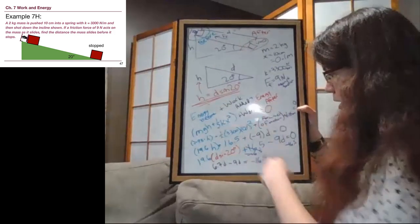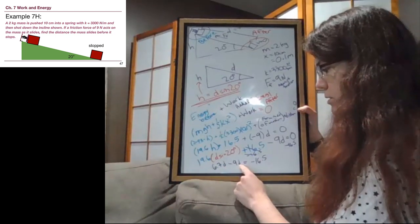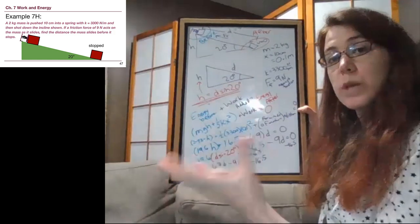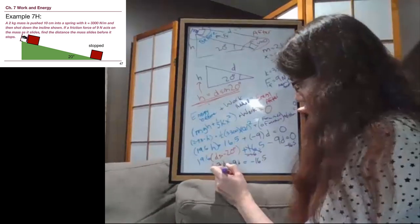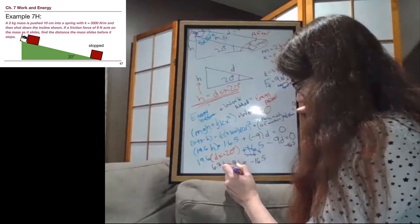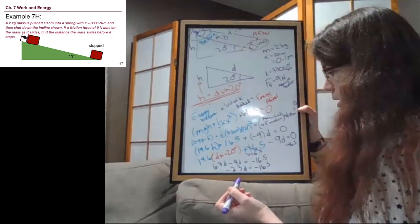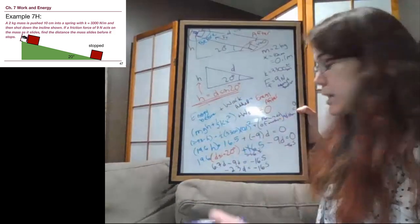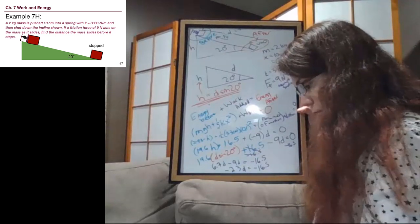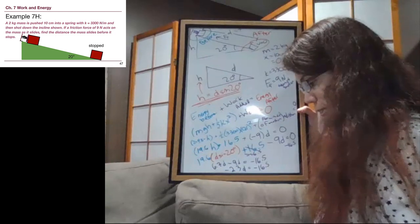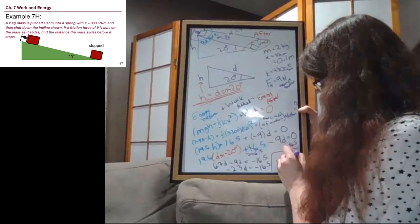Although it might look a little bit complex, what we see is that we have this many times the distance and that many times the distance. So just like with 2x plus 3x, we can add those terms together, where 6.7 minus 9 is negative 2.3, and then that's attached to D, and that's equal to negative 16.5. I will divide both sides by negative 2.3, so negative 16.5 divided by negative 2.3. We get that the distance D is 7.2 meters.